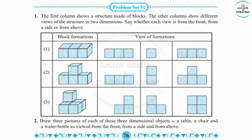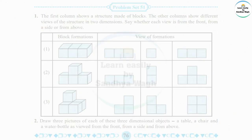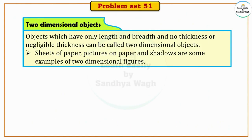But first, let us understand what two dimensional objects and three dimensional objects are. Two dimensional objects are objects which have only length and breadth, and no thickness or negligible thickness. These can be called two dimensional objects.